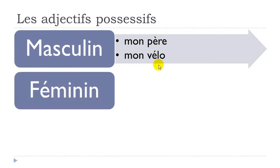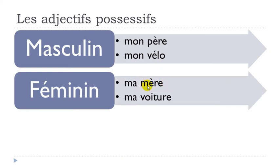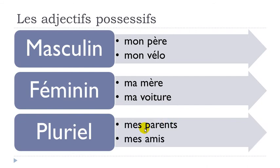Now two examples for the feminine. Mother is feminine, so you have ma mère — my mother, ma mère. Here you've got voiture, which means car — it's feminine, une voiture — so you put the feminine form: ma voiture. And for the plural: mes parents, because it's the plural form. And mes amis — friends, plural — so mes amis. Let's make this beautiful liaison: mes amis.